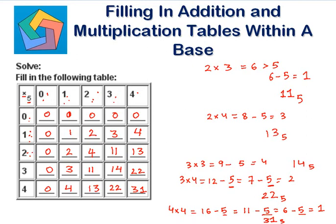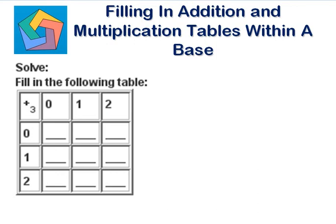Next problem. Fill in the following table. This is an addition table with respect to base 3. 2 plus 0 is 2. 2 plus 1 is 3, and 3 in base 3 is 10.